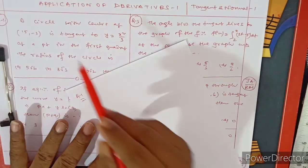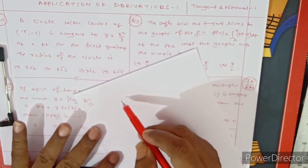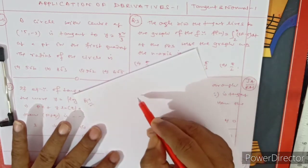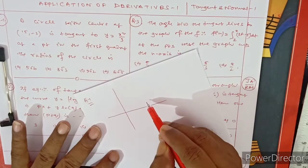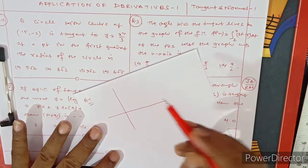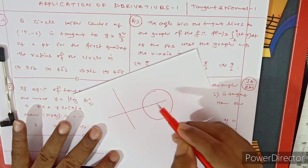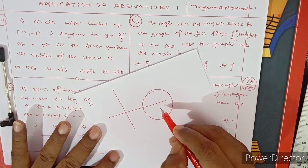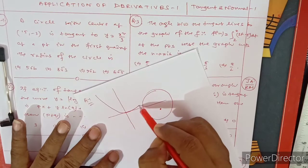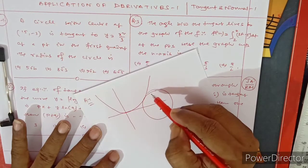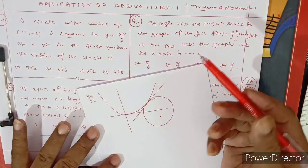Question 1: A circle with center at (15, −3) is tangent to the curve y = x²/3 at a point in the first quadrant. Find the radius of the circle. Suppose the coordinate axis is like this — the center is at (15, −3) and the tangent touches the curve at some point. The curve is drawn and the tangent point is in the first quadrant.